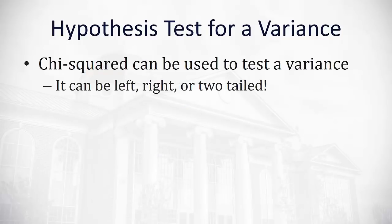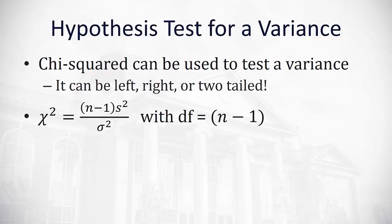Chi-squared can be used to test a variance. It can be a left-tailed, right-tailed, or two-tailed test, which is different than the prior tests we saw with tests for independence and goodness of fit, which were always right-tailed. The way we calculate chi-squared with a variance is we take the sample size minus 1 times the sample variance divided by the population variance.